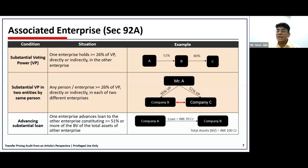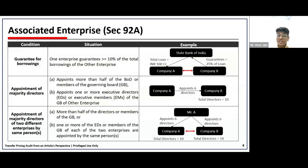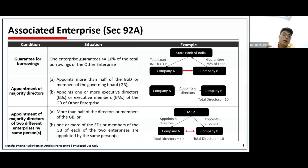The third condition covers advancing loans: where a company advances more than 51% of the loan to another entity relative to 50% of the book value of the entity, those entities are regarded as associated enterprises. There is also a clause for guarantees where guarantees exceed 10% of total borrowings. There is also a clause for appointment of majority directors — more than half of the board of directors or more than one executive director — making parties deemed associated entities.